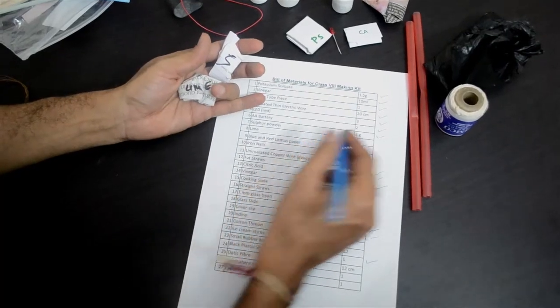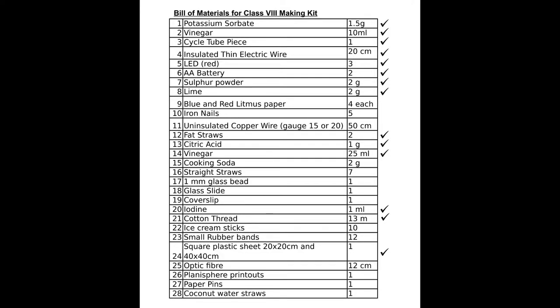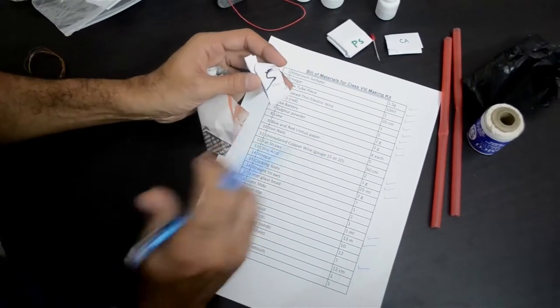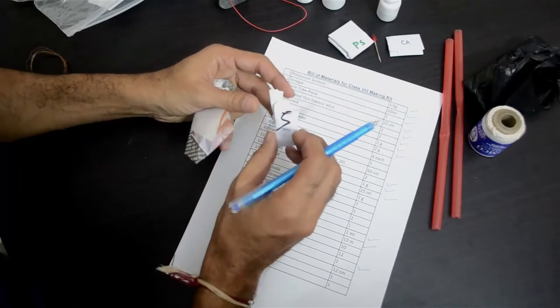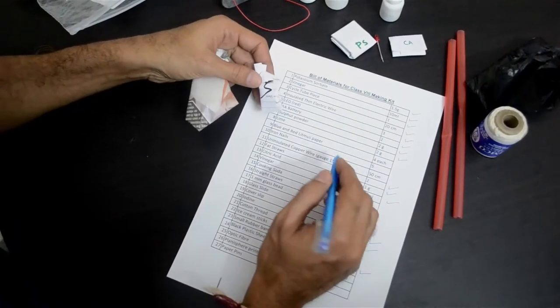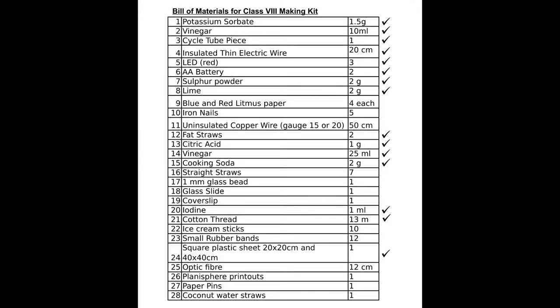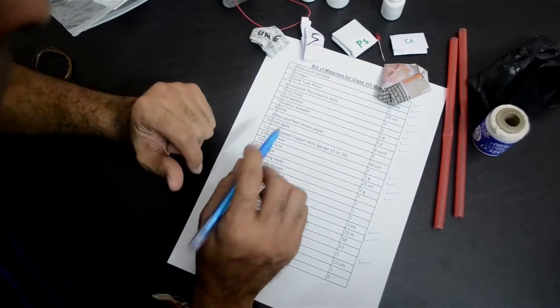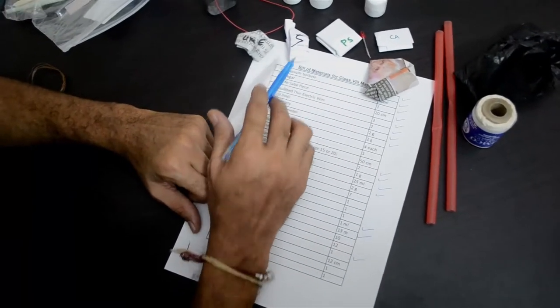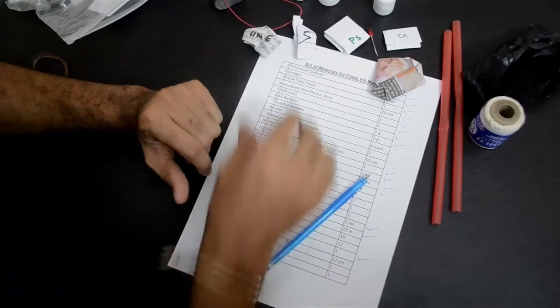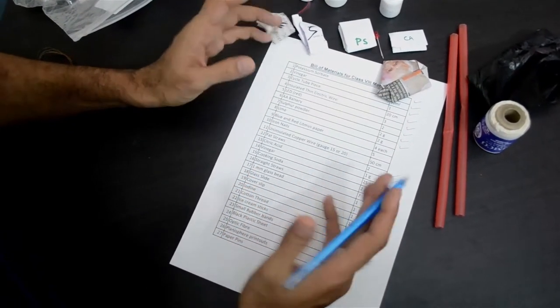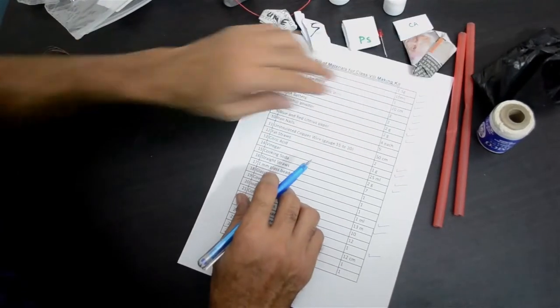One which is labelled as Lime. That's item number 8 in our list. So the packet we saw before this is soda, and the one which is labelled as S is sulphur. So sulphur powder, 2 grams of that, and cooking soda, around 2 grams of that. If you are not sure which one is which, you can open the pack. Sulphur will be yellow in color, and cooking soda would be white in color. And that's how you will be able to differentiate the two.